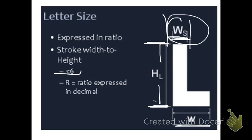The recommended ratio for a black letter or dark letter on a light background, black on white, is 1 to 6 to 1 to 8.